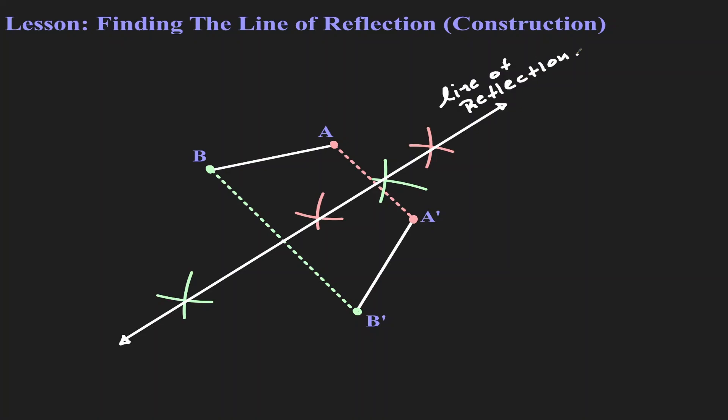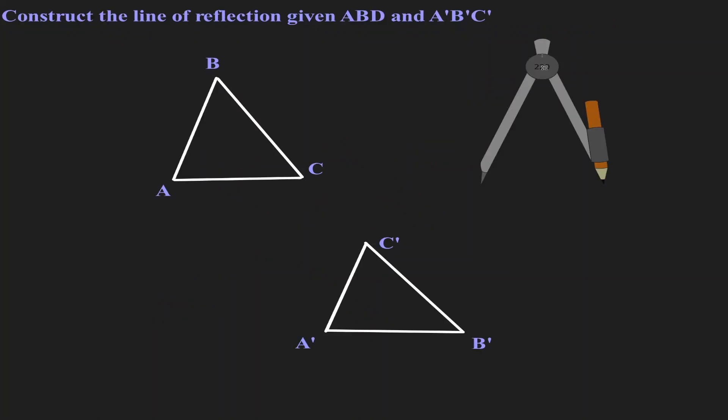Let's take a look at another example. Here we have triangle ABC, and it was reflected over some line, and the location of the image is A'B'C'. Let's find the line of reflection.